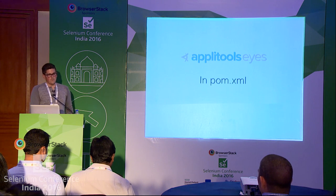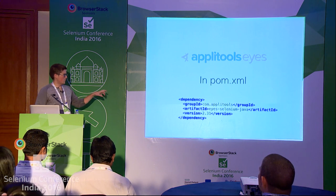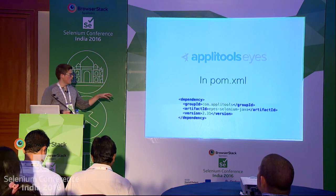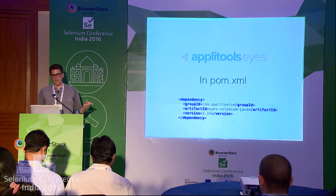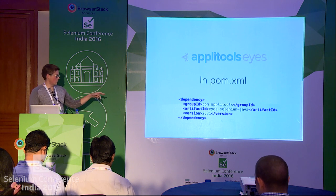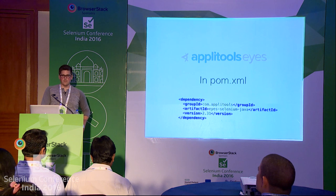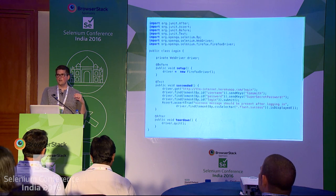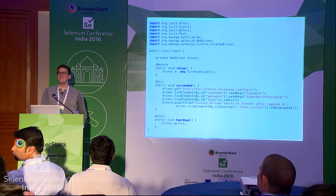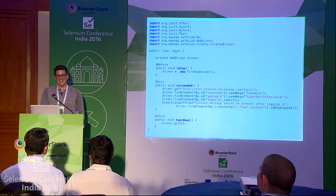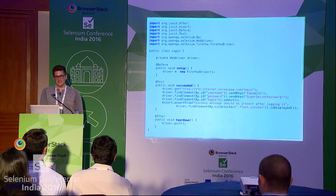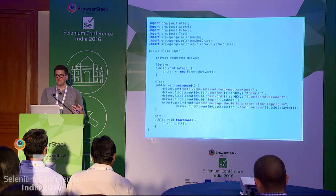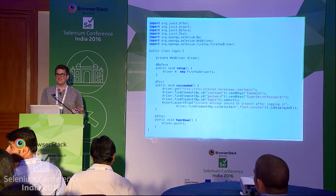In your POM XML, assuming we're using Maven, you grab the Eyes Selenium Java SDK. The version number is probably around 2.5 or 3.0 now. The Eyes SDK also actually pulls in the latest Selenium bindings, so they might be pulling in the beta pretty soon.